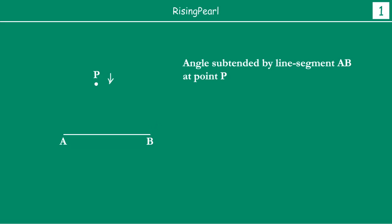The only way to find this out is basically to join AP and PB, right? So, agar aap AP join karte ho and PB join karte ho, Dostho, then you will see that the angle subtended by Line Segment AB — what angle does it show at P? Matlab, agar aap point P pe khadhe ho, aur agar aap look at this entire line AB, what will be the angle? Aap ki joh line of sight ho ga, the angle subtended by line AB at point P will be this angle — that is, the angle subtended by line AB at point P, Dostho, will be nothing but angle APB.